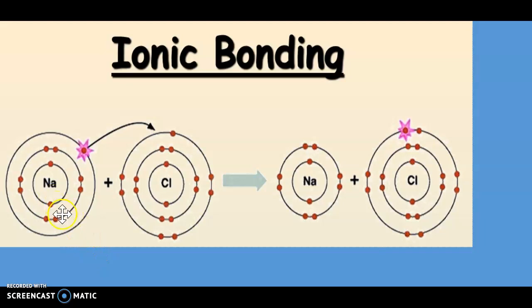Chlorine has 17 electrons with electronic configuration of 2, 8, and 7.